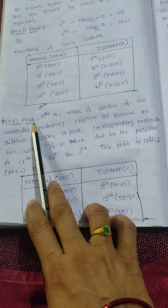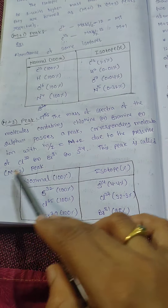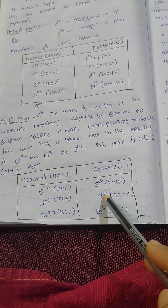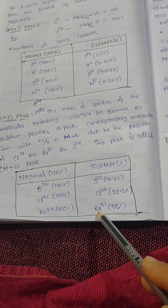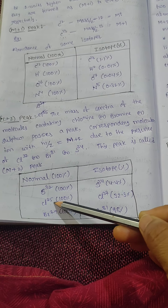For M+2 peaks, the molecular ion is two mass units less than the M+2 peak. Mass spectra of molecules containing chlorine, bromine, or sulfur show a peak corresponding to the molecular ion at M+2, due to the presence of chlorine-37, bromine-81, or sulfur-34. This peak is called the M+2 peak.